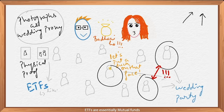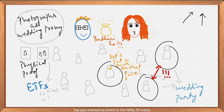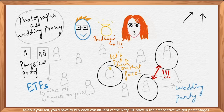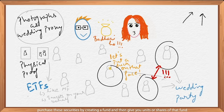ETFs are essentially mutual funds — we'll cover mutual funds in detail in a later video. But essentially, it's a fund which buys and holds securities on your behalf. Say you wanted to invest in the Nifty 50 index. To do it yourself, you'd have to buy each constituent of the Nifty 50 index in their respective weight percentages. That will cost you a lot — more than 1 lakh rupees. An ETF will do that for you.